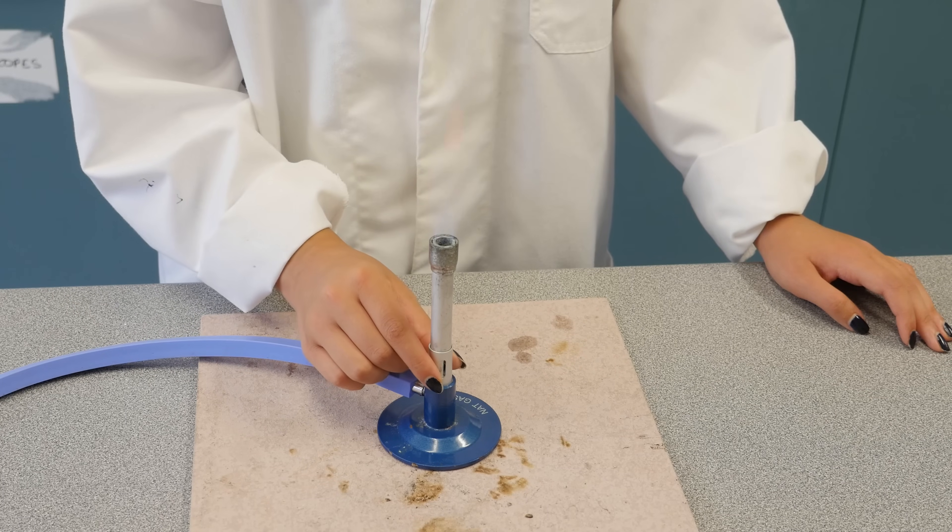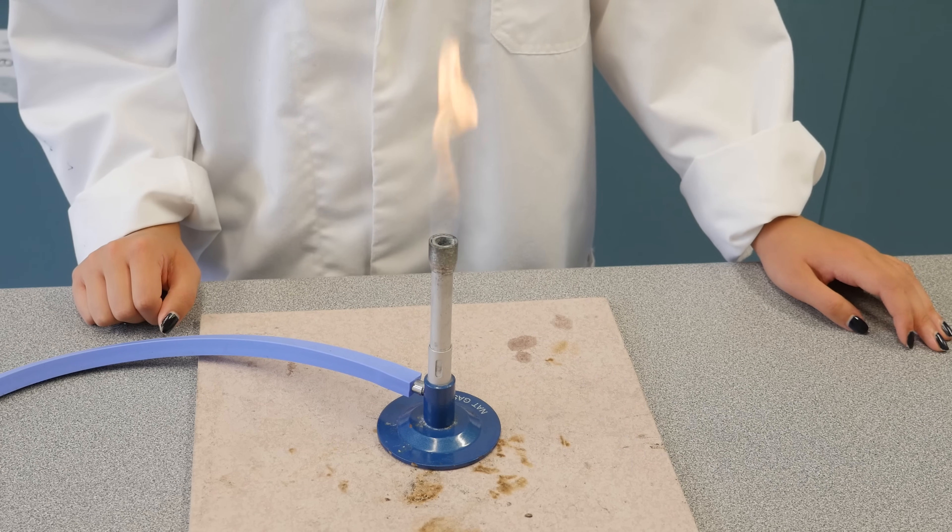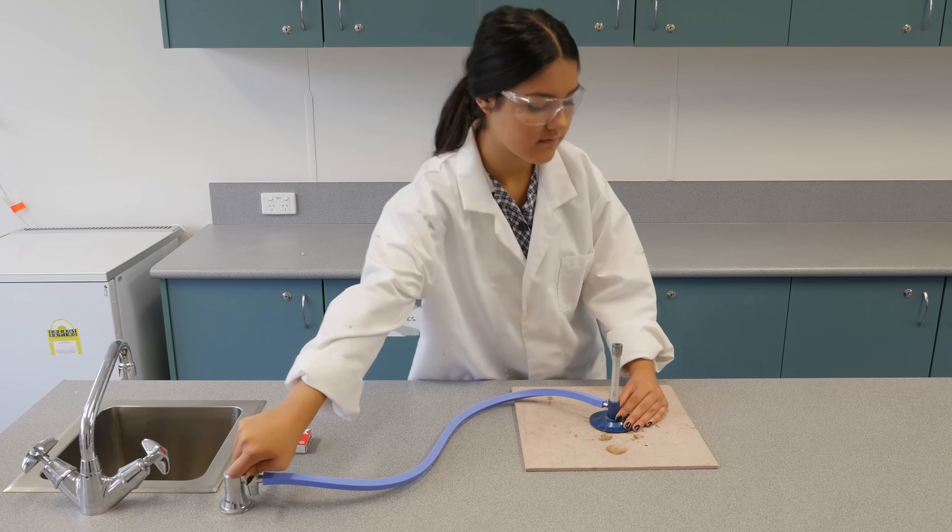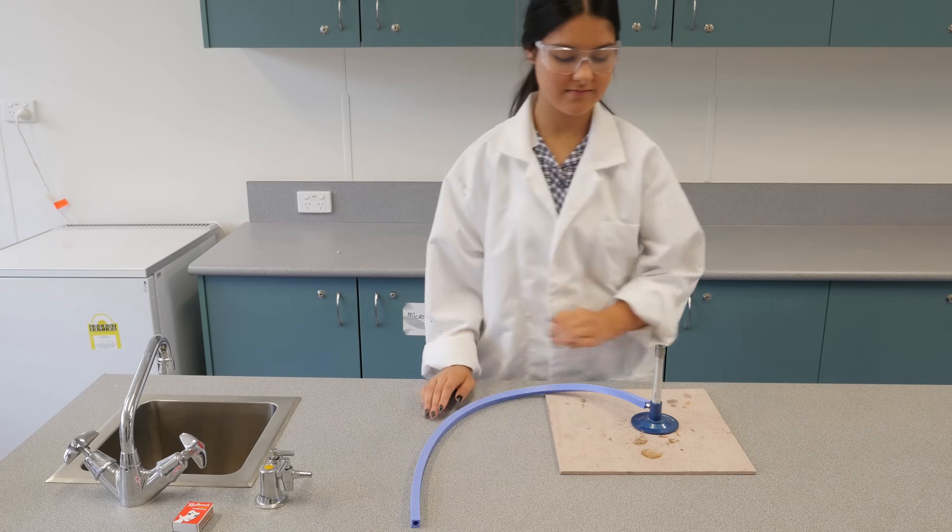Okay, so you've finished your experiment. Before turning off the Bunsen burner, close the air hole first to return to the safety flame. Now you can turn off the tap and blow out any small flame that remains. Disconnect the hose and leave the Bunsen burner to cool before packing it away.